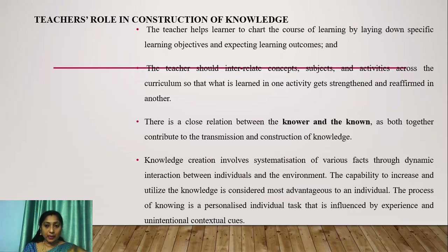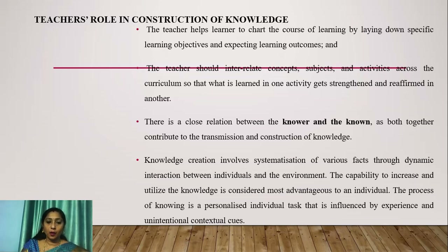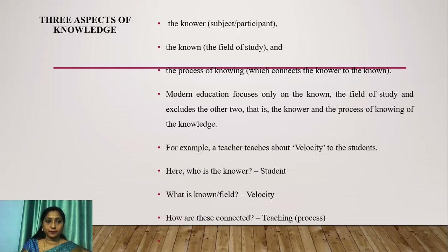Knowledge creation involves systematization of various facts through dynamic interaction between individuals and the environment. The capability to increase and utilize knowledge is considered most advantageous to an individual. The process of knowing is a personalized individual task that is influenced by experience and non-intentional contextual cues. The three aspects involved in the knowledge perspective are the knower, the known, and the process of knowing.